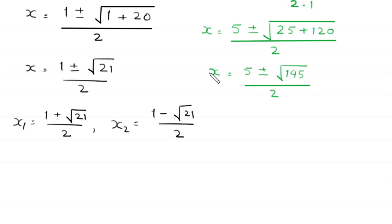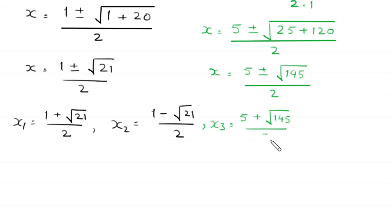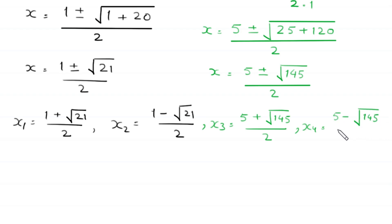So from here we get the other two values of x: x3 is equal to 5 plus square root of 145 divided by 2, and x4 is equal to 5 minus square root of 145 divided by 2.